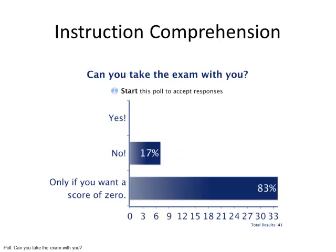Instruction comprehension is great when you want to later be able to hold students accountable for specific instructions given in class. In this case, they were reviewing their midterm and I wanted them back — correct answers were both 'no' and 'only if you want a score of zero,' because my threat was that these aren't in the grade book yet and if you don't give it back, you won't get a score. Should a student have taken an exam home, I would be able to pull their responses from Poll Everywhere as evidence. Fortunately, no one took it and they all understood.